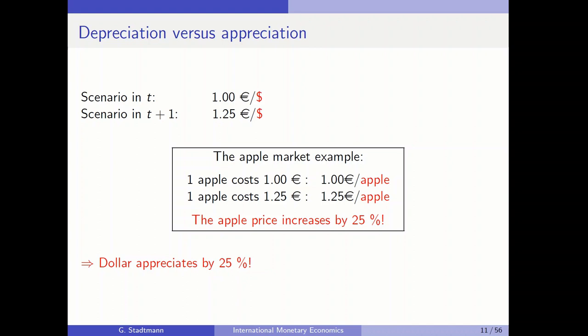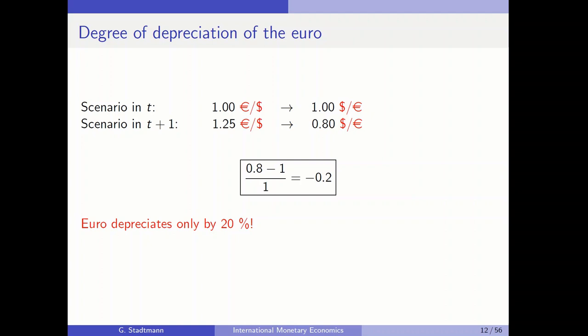When the dollar appreciates, the euro depreciates — but by how much? To find the euro's depreciation, we must switch to the reciprocal notation. Computing the relative change: 0.8 minus 1, divided by 1, equals negative 0.2. So the euro depreciates by only 20%, despite the US dollar appreciating by 25%. The dollar appreciates by 25% while the euro only depreciates by 20%.